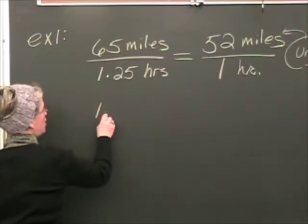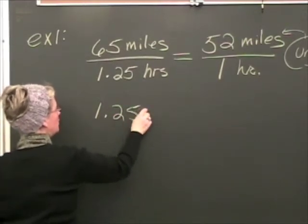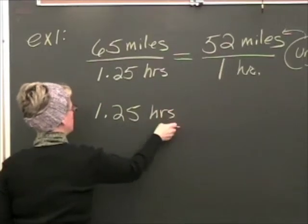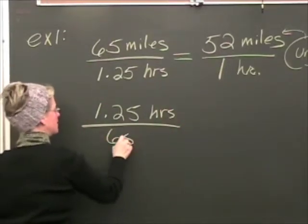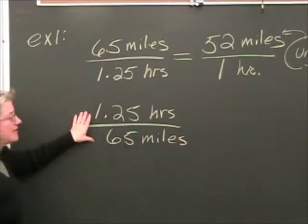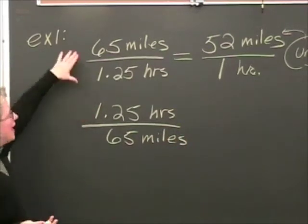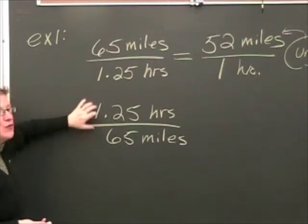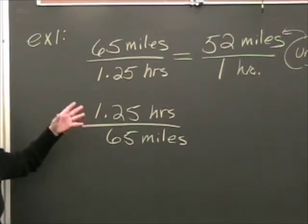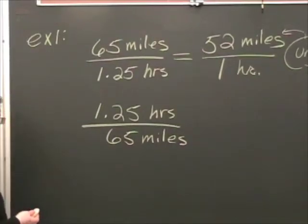Let's say I say to you, it's going to take me an hour and 15 minutes or 1.25 hours to go 65 miles. This is exactly the same situation as this. But are these two fractions equal to each other? No, absolutely not. But it's still describing the same rate.